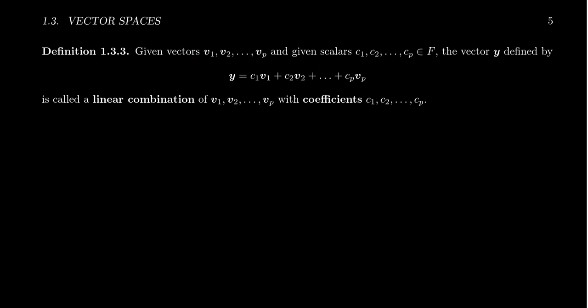So now a linear combination. To define that, take some list of vectors here. So v1, v2, up to vp. This is p many vectors from some vector space.